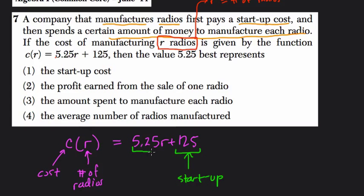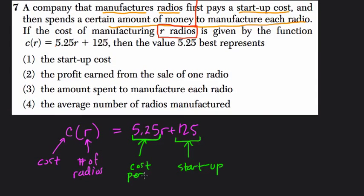Therefore, 5.25 times the number of radios, well that's logically the cost, right? It costs to manufacture each radio.